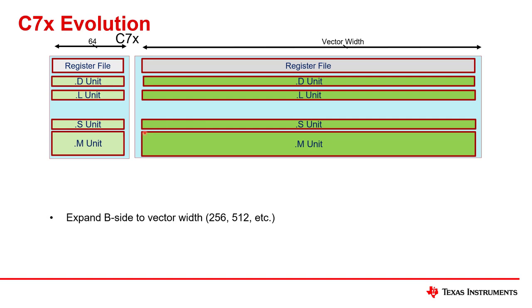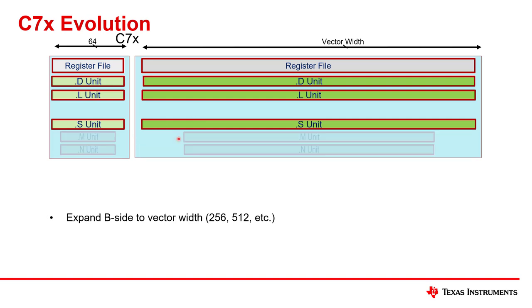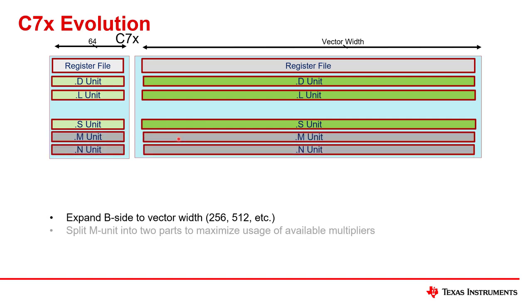Another change is that the M unit is split into two units — the M unit and the N unit. This means you can have more multiply instructions occurring in parallel, one on the M unit and one on the N unit.